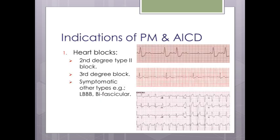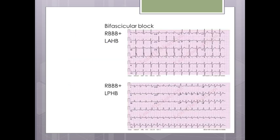Indications for pacemaker insertion include heart block — specifically second-degree Mobitz type II and third-degree (complete) heart block with complete AV dissociation. Symptomatic other types such as left bundle branch block or bifascicular block (right bundle with left anterior or left posterior hemiblock) are also indications.